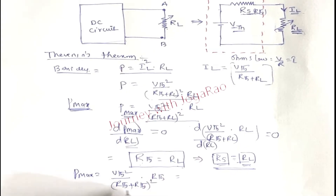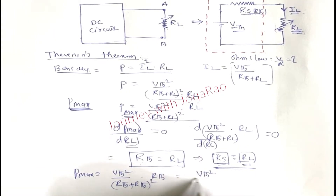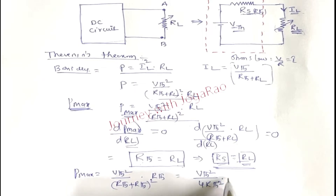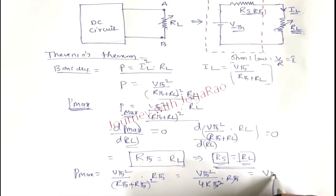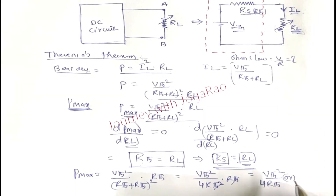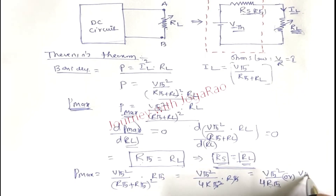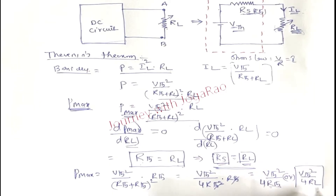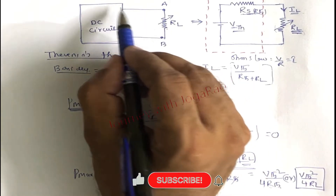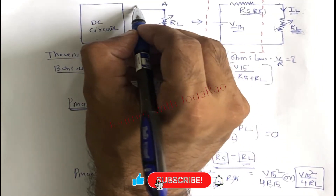Substituting RL = R_Thevenin into the power formula: P_max = V_Thevenin² / (4 × R_Thevenin). This is the maximum power formula.